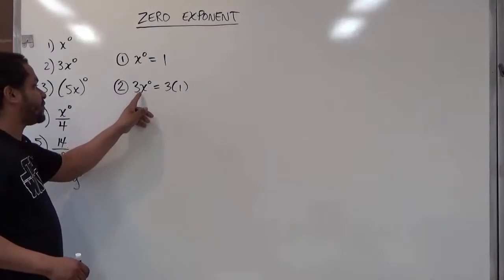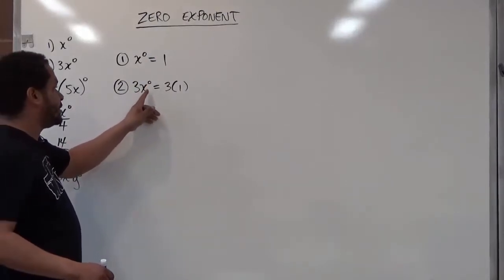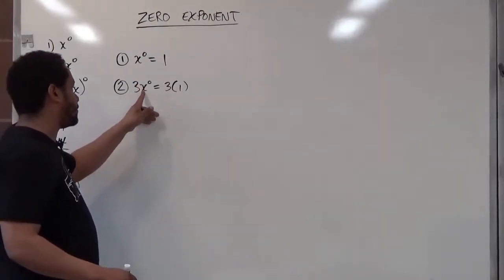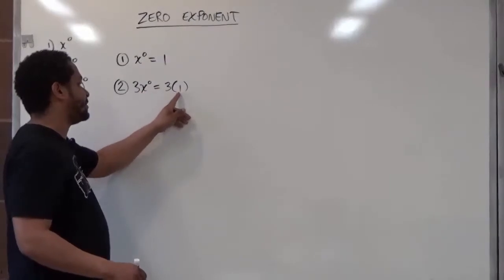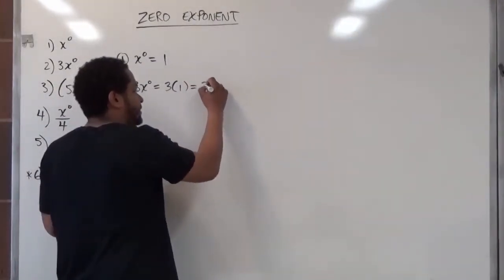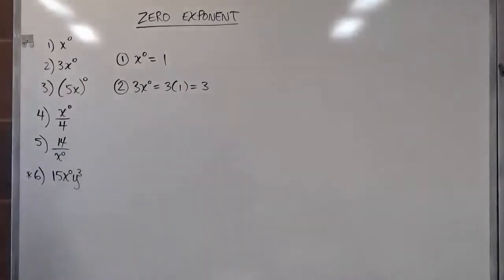So when you see three x to the power of zero, only the x to the power of zero becomes a one. And this then just multiplies with the three which gives us just three.